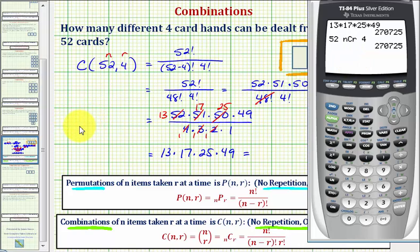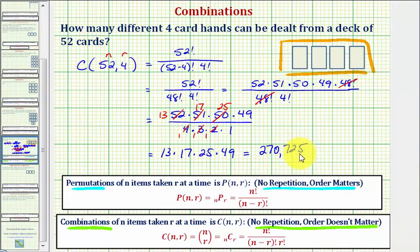Again, we have two hundred seventy thousand, seven hundred twenty-five. And this is the number of four-card hands that can be dealt from a deck of fifty-two cards. So we have two hundred seventy thousand, seven hundred twenty-five possible four-card hands.